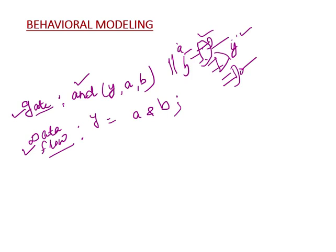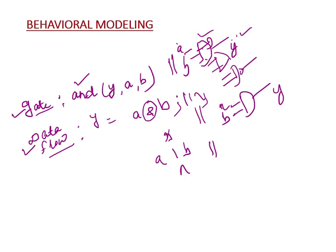In data flow modeling, we use boolean expressions — for example, 'Y = A & B' for an AND gate, or 'A | B' for an OR gate. The designer also directly knows how signals are flowing from input to output. Writing 'A | B' will be interpreted by the synthesis tool as an OR gate.